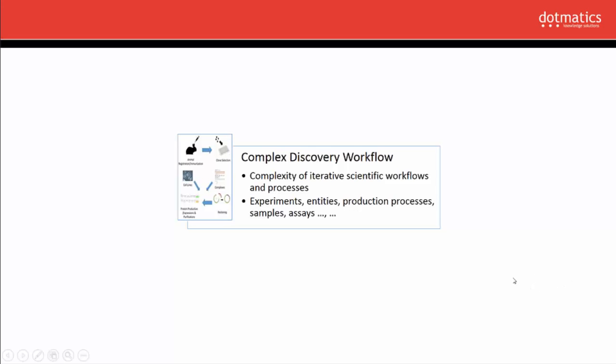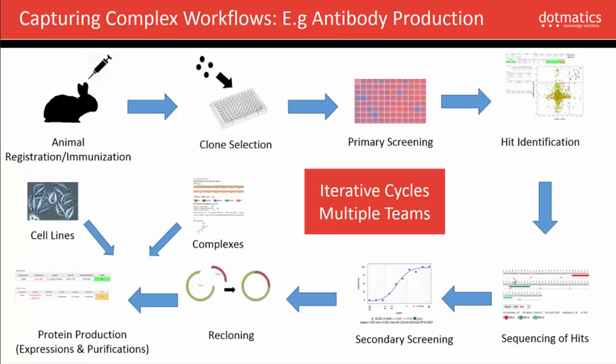Starting with the complexity of the workflow, I'll take one simple example — an antibody production workflow. Even this is very simplified, going from initial animal registration and immunization through cloning, rounds of screening, sequencing to identify interesting hits, and then through recloning and final protein production. In reality there are many iterative cycles behind each step, multiple teams, and possibly multiple companies involved, and we could repeat this kind of workflow for the other entity types being produced today.